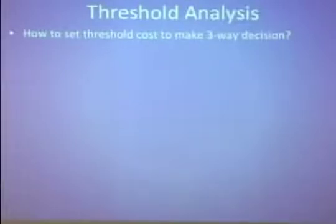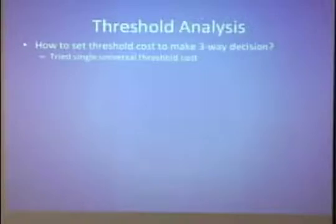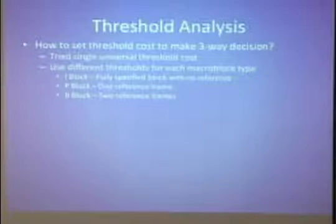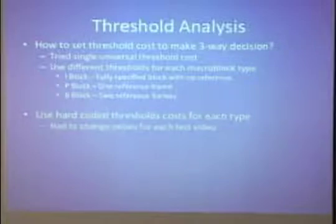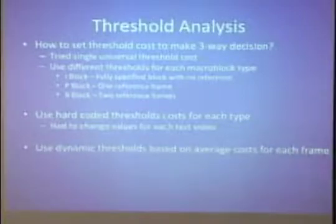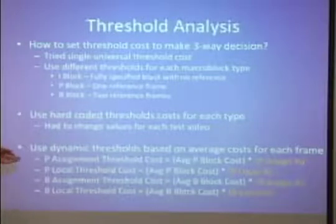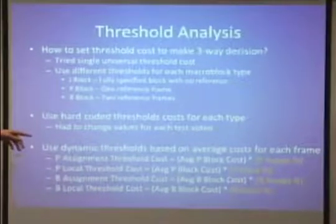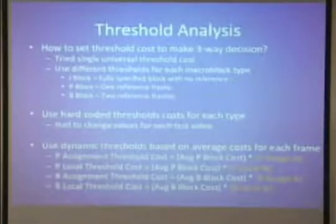We had to decide how to set the actual threshold values. First, we tried a single universal threshold, which didn't work out well. So we tried setting thresholds for each macro block type — I, P, and B blocks. We don't worry about the I block since it has no motion vector. A P block uses one reference frame; a B block uses two. We used hard-coded threshold values based on these types for each video, which worked pretty well, but we had to change the hard-coded values for each test video. So we based them dynamically on the average threshold cost per frame at low resolution. Our P assignment threshold, for example, is the average P block cost at low resolution times the P assignment percentage — the values in orange are what we adjusted to find the best trade-off between speed-up and quality loss.